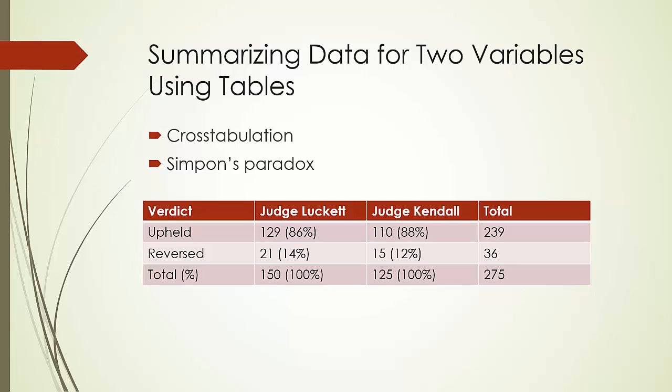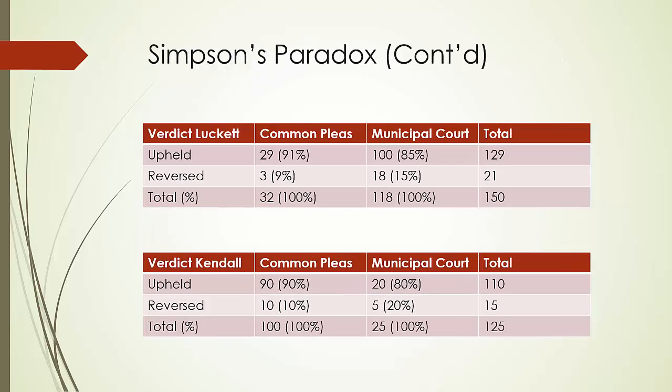However, let's look at the un-aggregated cross-tabulations. From the un-aggregated cross-tabulations, we see right away that Judge Luckett is actually doing a better job. For Judge Luckett, verdicts were upheld 91% of the time in common police court and 85% of the time in municipal court. The type of court turns out to be a very important factor when evaluating the record of the judges. Both judges perform better in common police court. However, the large majority of Judge Luckett's appealed verdicts are common police cases, whereas the large majority of Judge Kendall's appealed verdicts are municipal cases.